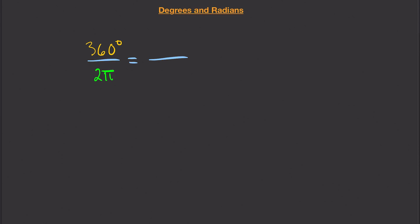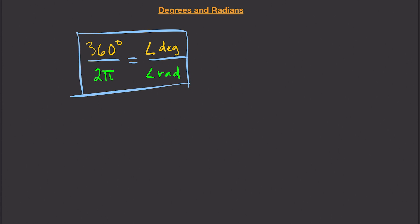360 degrees equals the angle in degrees, and 2π is the angle in radians. So if I want to convert from degrees to radians and from radians to degrees, this is the equation I will use. We can simplify this further: 360 divided by 2π gives us 180 over π, because 360 divided by 2 is 180, and that equals the angle in degrees divided by the angle in radians.